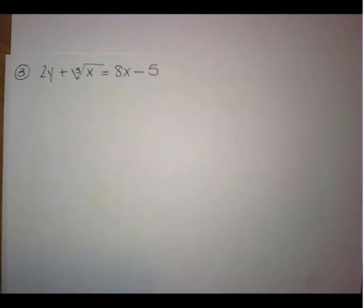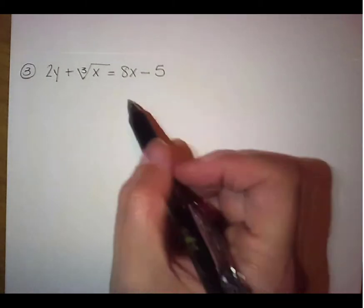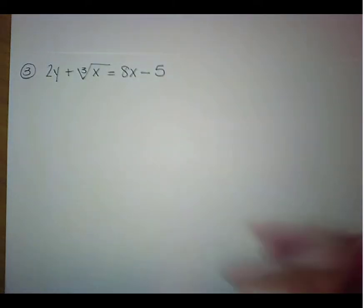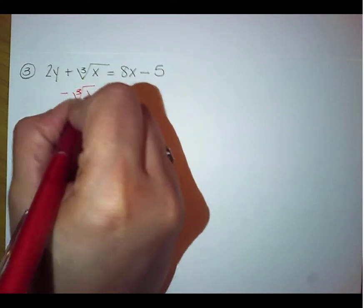So we have 2y plus the cube root of x equals 8x minus 5. Again, what we need to move first is that cube root of x. So since it's a plus, we're going to subtract the cube root of x. When you're doing this,